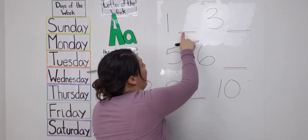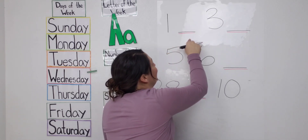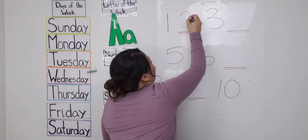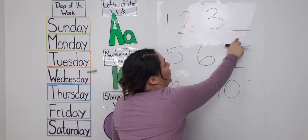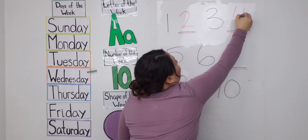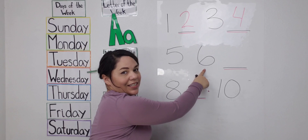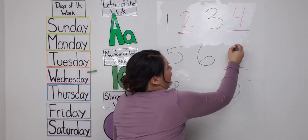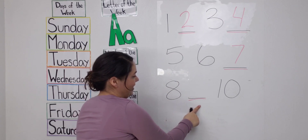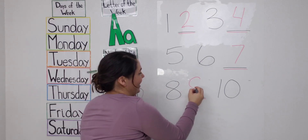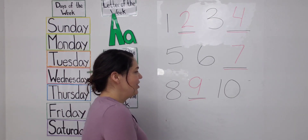One. What comes after number one? One, two. Good, keep going. Three. Four. Good job. Five. Six. Seven. Good. Eight. Nine. Good, and ten. Good job friends.